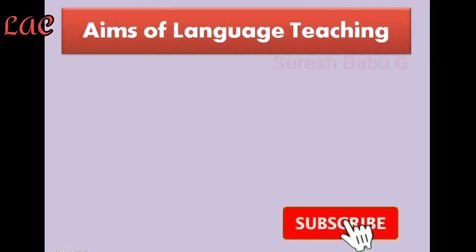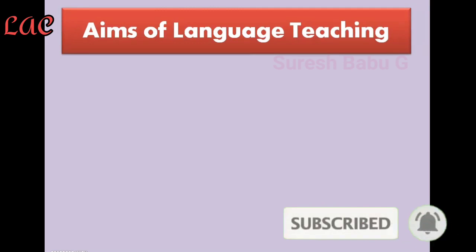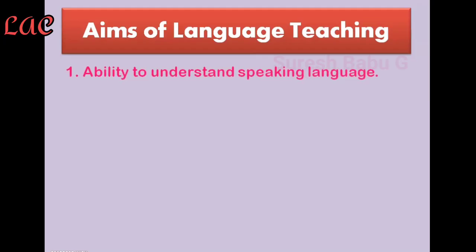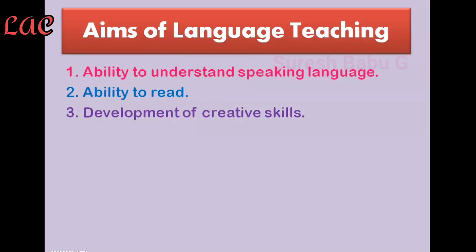Next, what are the aims of language teaching? Why do we teach language? What is our aim as a teacher in teaching language? First of all, it is the ability to understand and speak the language. A student or child first learns to speak, and in order to make them proficient we have to teach them how to do it. So the first aim of language teaching is the ability to understand and speak the language.